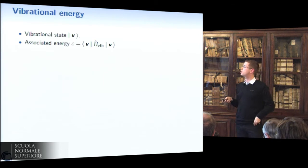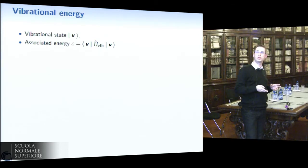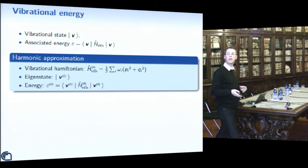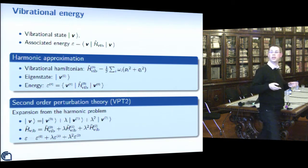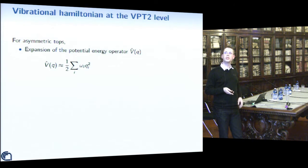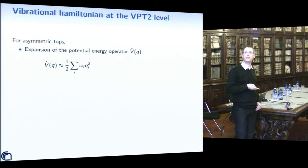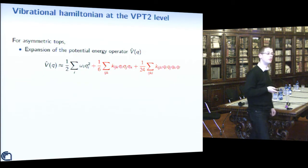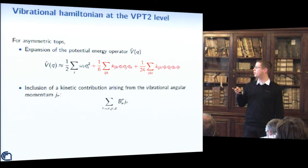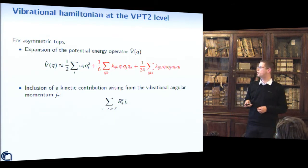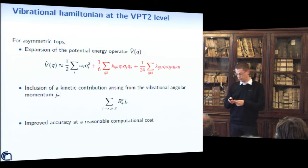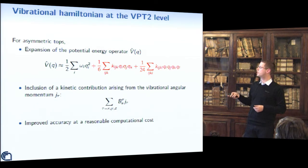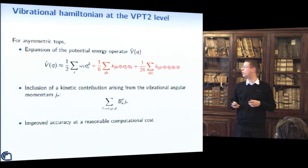More recently I have been working on anharmonic vibrational spectroscopy together with vibronic spectroscopy. The first part, done entirely by Professor Barone, was the calculation of anharmonic vibrational energies. We used second-order perturbation theory, starting from the solution of the harmonic approximation. The Hamiltonian is based on an expansion of the potential energy surface adding the third and fourth derivatives of the potential energy, and the Watson Hamiltonian includes a kinetic contribution from the vibrational angular momentum. This VPT2 approach allows improved accuracy at a reasonable computational cost; the most expensive part is computing these derivatives by numerical differentiation, which can be straightforwardly parallelized.